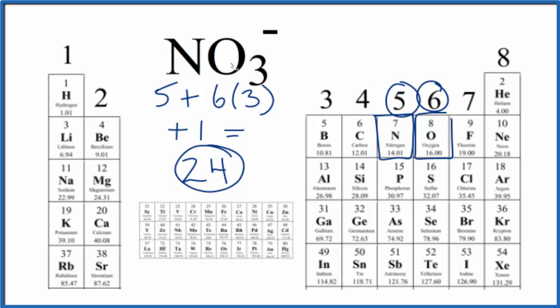If we wrote a Lewis structure for NO3 minus, we'd distribute these 24 valence electrons around the atoms to fill their octets. And that would look like this.